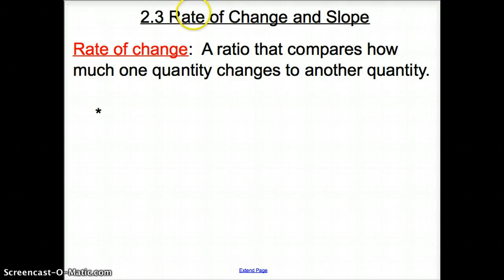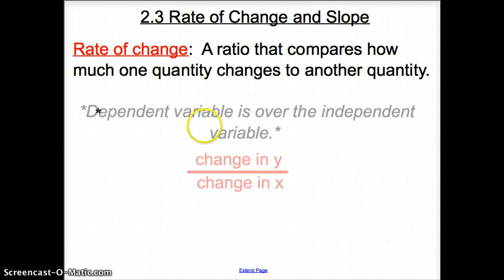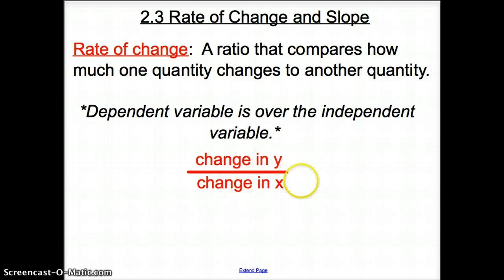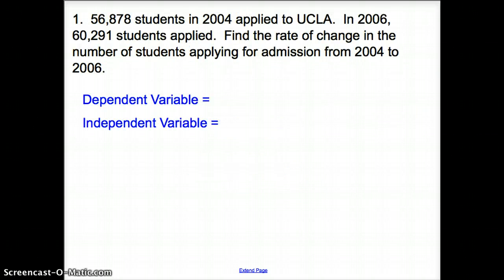Rate of change is a ratio that compares how much of one quantity changes to another quantity. We also know rate of change as the dependent variable over the independent variable, such as y is the dependent variable over the independent variable x. So what do some of these problems look like?